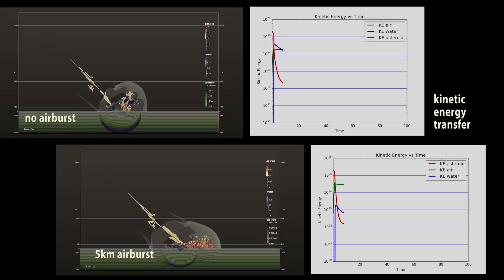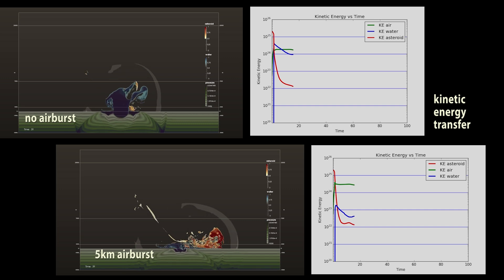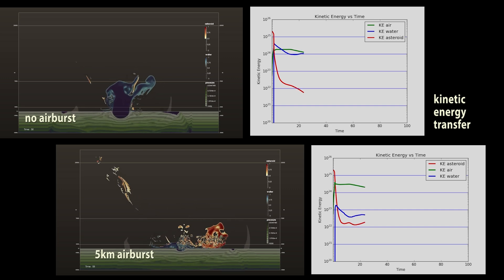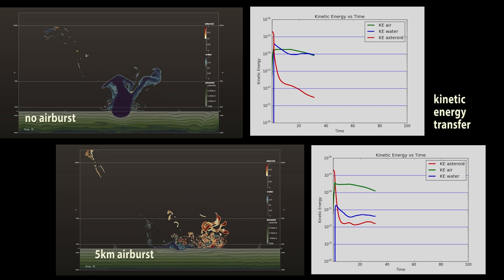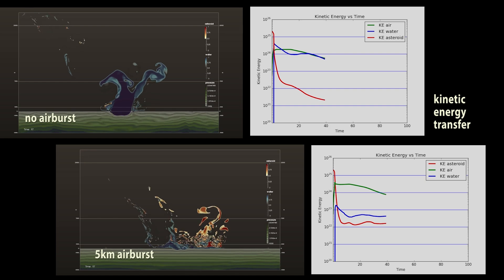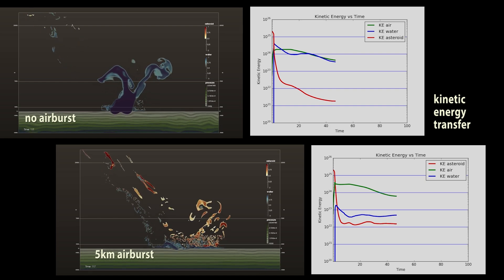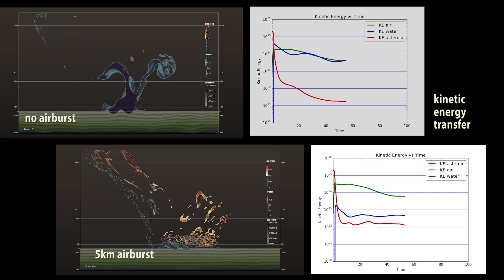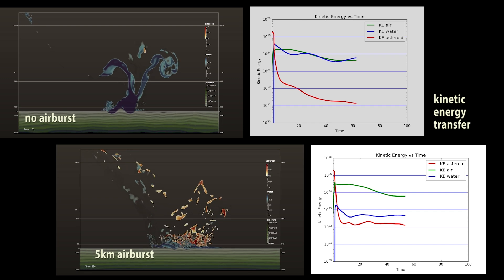Here we see the difference in energy transfer with and without an airburst. Whether or not there is an airburst changes how much kinetic energy is transferred to the air and water. An airburst breaks the asteroid apart, so that much of it skims the surface of the water, rather than slamming into it.